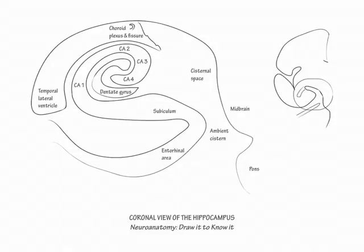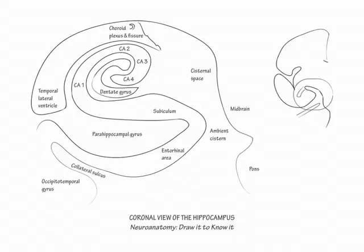Inside the inferior turn, label the parahippocampal gyrus. Then show the occipitotemporal gyrus, inferolateral to it. Indicate that the collateral sulcus separates them. Finally, include the tentorium cerebelli, over which the uncus of the medial temporal lobe herniates when there is increased intracranial pressure.